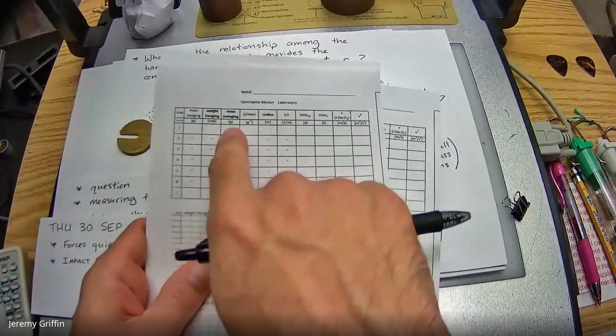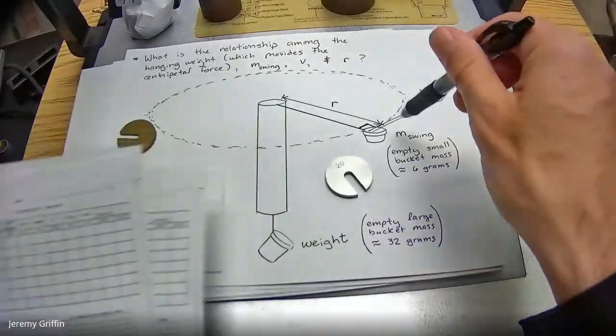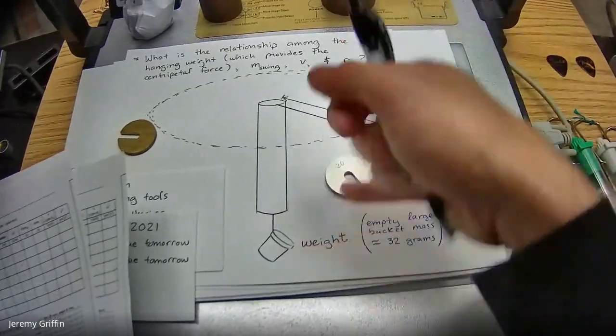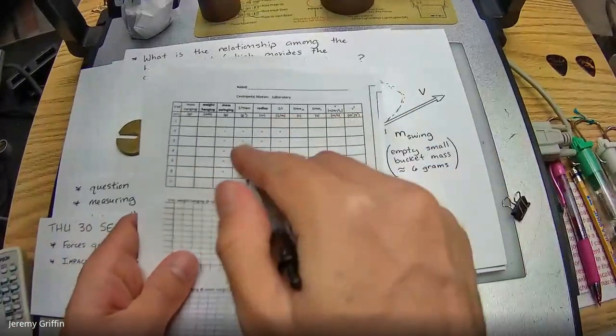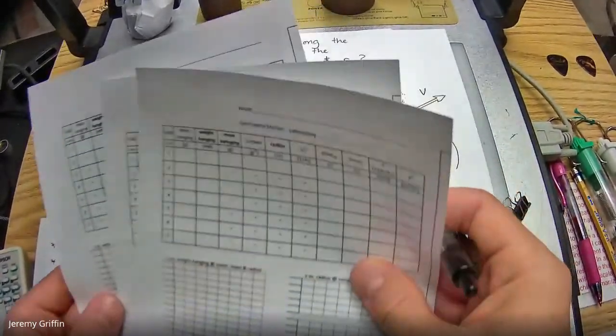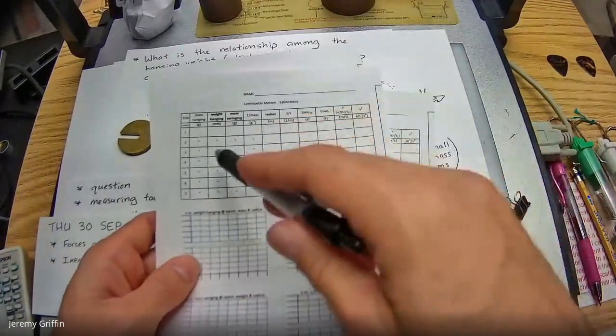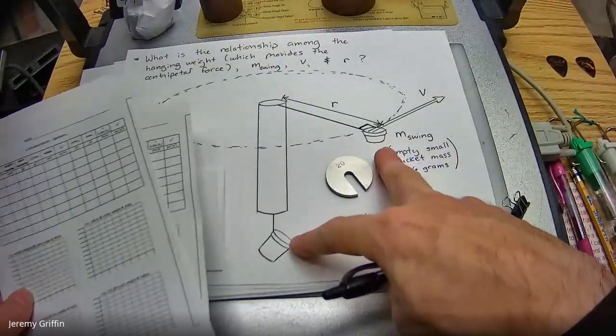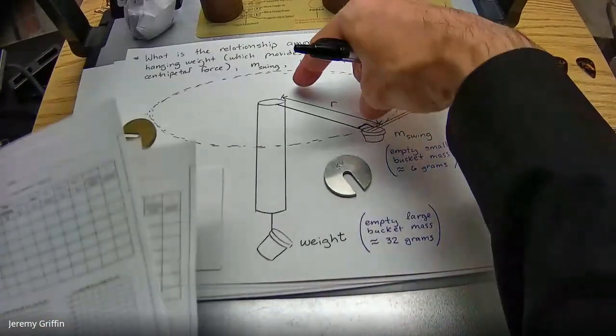If you don't have this page that has the hanging weight as the independent variable, then you might have one with split hash marks, which would be the swinging mass as independent variable. So if you have this one, then you'd change out the swinging mass every time, but you would control for the weight and also control the radial size. If you don't have that one, you might have the one where all the hash marks are on the left side, in which case you would leave the two canisters just alone, just leave them closed the entire lab.